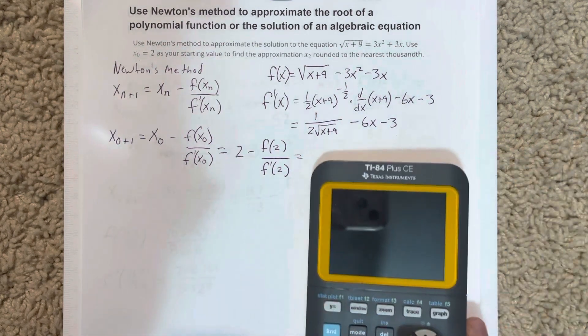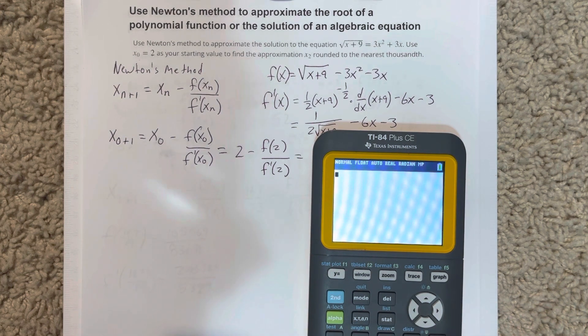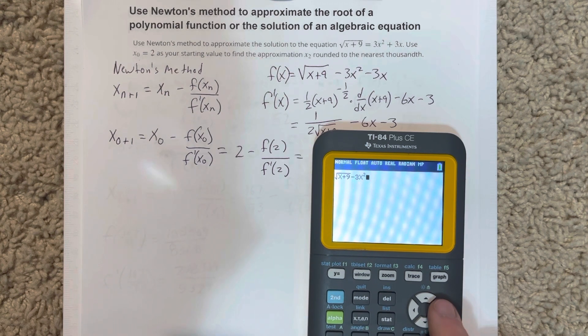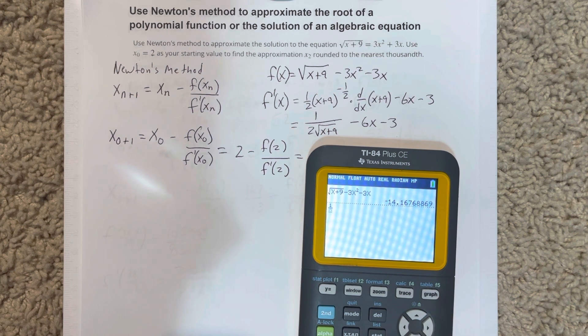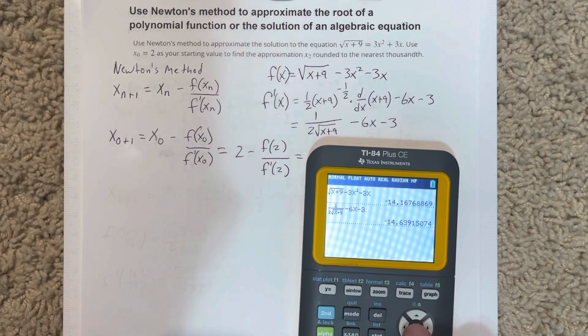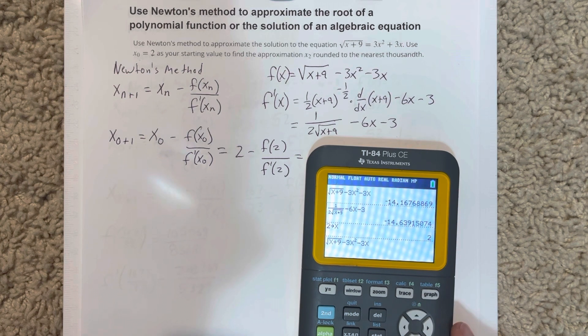What I'm going to do is I'm going to plug in both these functions into my calculator. So one function is square root of x plus 9 minus 3x squared minus 3x. I've got the original function and the derivative there. Now I'm going to set 2 equal to x and then I'm going to plug those values in.